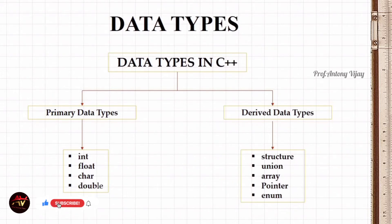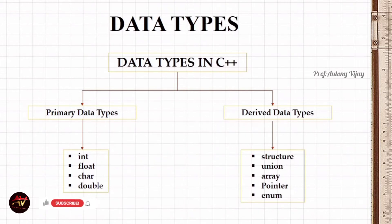Usually data types are categorized into two types: primary data types and derived data types. Under primary data types we have integer, float, character, and double. Under derived data types we have structure, union, arrays, pointer, and enum.